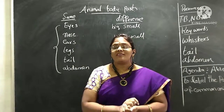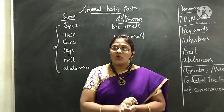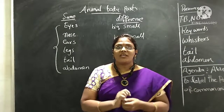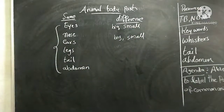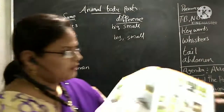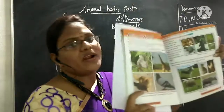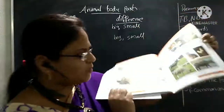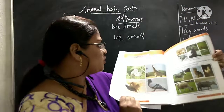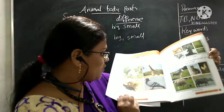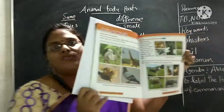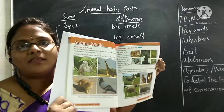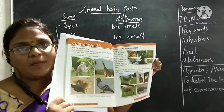Once open your textbook and see the picture there. I will show you — page number 76. You can see different types of animals. Page number 76: first one monkey, second one giraffe, then cat and bird. The parts are different somehow, but common parts like eyes and legs are the same. Only the sizes are different.